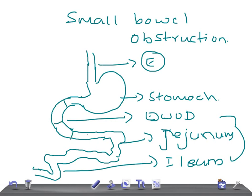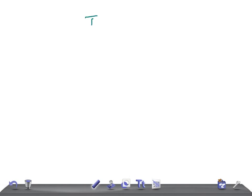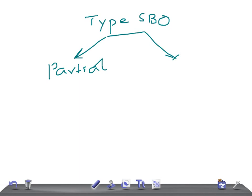Small bowel obstruction is any obstruction from the duodenum to the ileum. There are different types of obstruction. Types of SBO: it can be either partial or complete. Partial means there is passage of some food past the obstruction. Complete means the obstruction is total — no fluid will pass through.